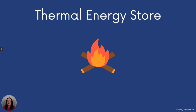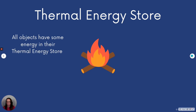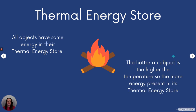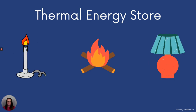The final one is the thermal energy store. Thermal energy can be found in almost everything — anything that heats up has a thermal energy store. The fire is the example here. What we've got to remember is the hotter an object is, meaning the higher its temperature, the more energy is present in the thermal energy store. There are different examples: the Bunsen burner, the campfire, and the lamp all have thermal energy stores. You'll notice that when you go to touch the bulb, it gets warmer over time, showing that there is thermal energy in its store.